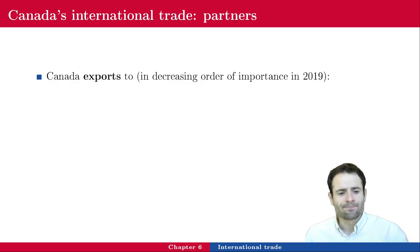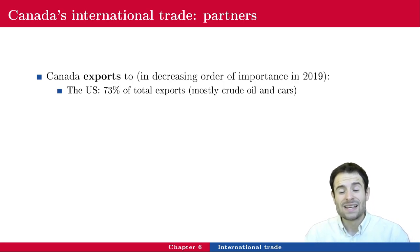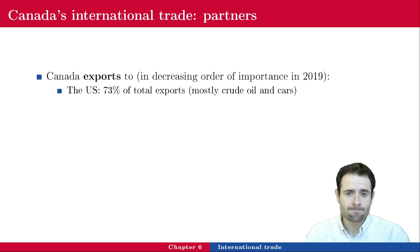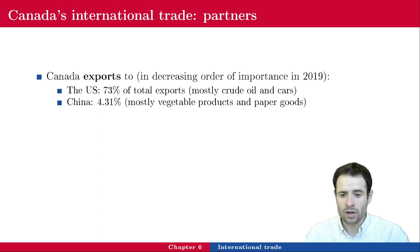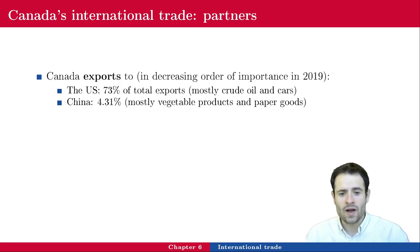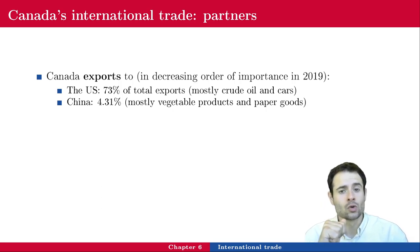In 2019, Canada exports in decreasing order of importance: the US is the first partner, representing 73% of total exports — mostly crude oil and cars. The second main trade partner is China at 4.31%, mostly vegetable products and paper goods. It's not surprising to find vegetable products, paper goods, and crude oil among Canada's main exports, as it is endowed with a lot of wood resources — the lumber industry is huge — and crude oil, especially in northern Alberta.